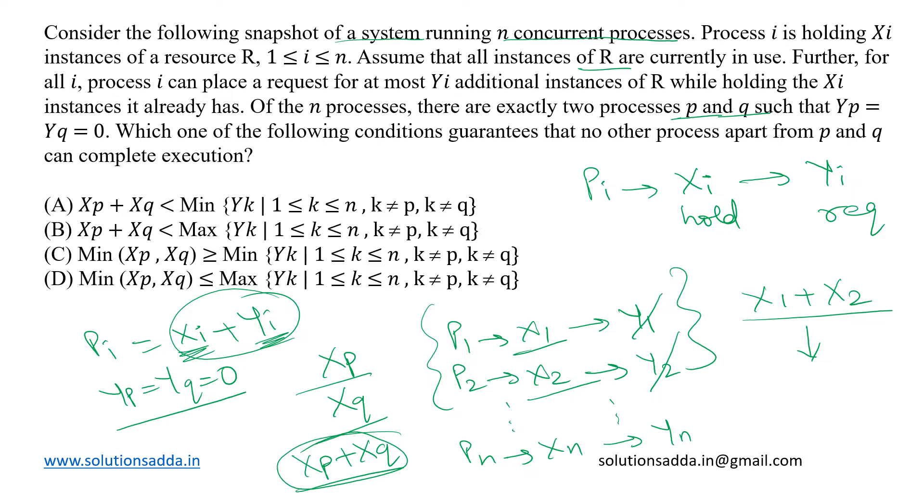But they have asked us for a condition which guarantees that no other process apart from these P and Q must be able to complete its execution. So now, what do we mean by this is, if these X1 plus X2 excess resources have been released into the stream for others to use and still they must not be able to complete their execution, which means that this X1 plus X2 must be less than the demand of any of these N-2 processes.